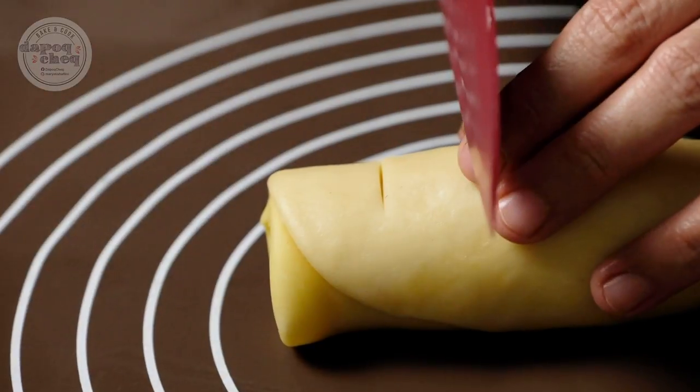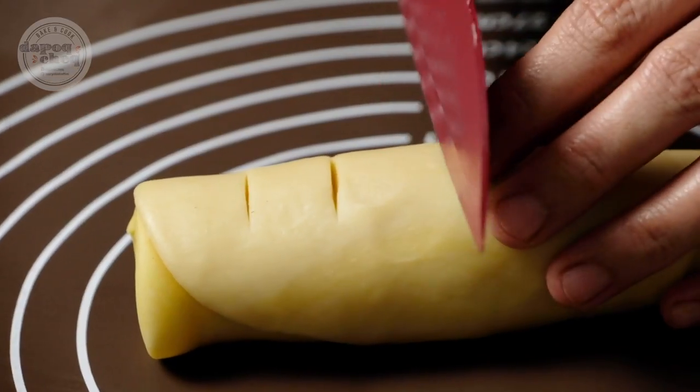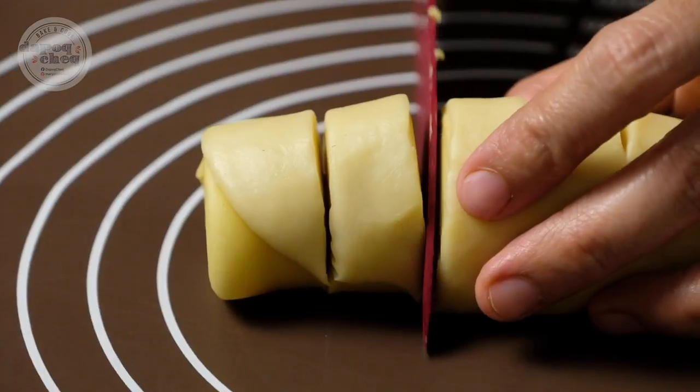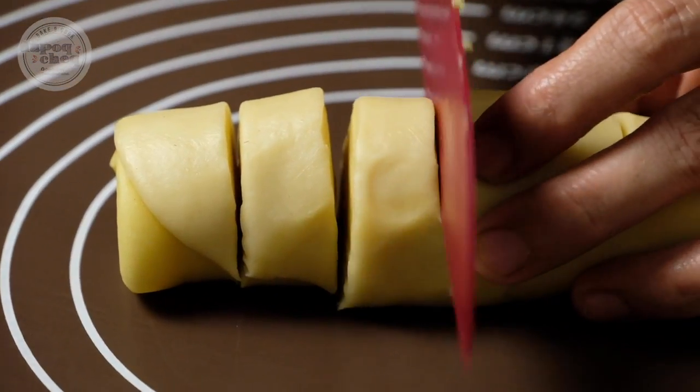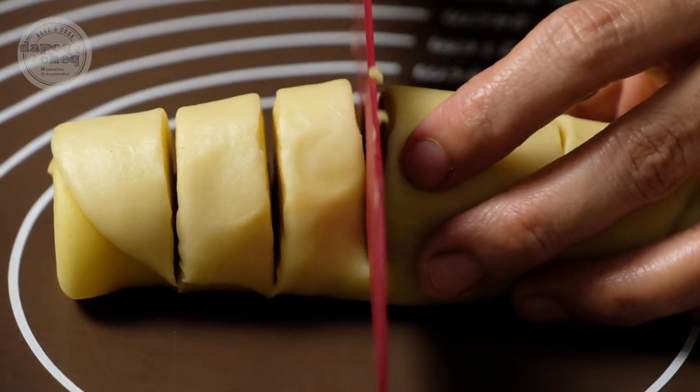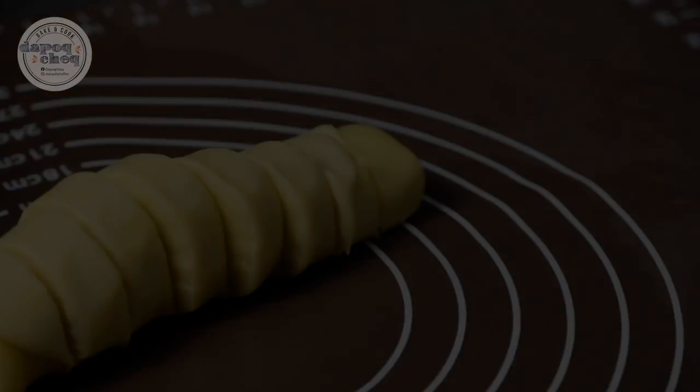Untuk potong, first kita buat marking dulu nak bagi senang. Jarak dia lebih kurang 1 inci each. Potong pelan-pelan, ikut marking yang kita dah buat tu. Jangan tekan kuat-kuat, kalau tak nanti dia layer kat dalam tu dia nanti dia macam renggang macam tu, nanti dia tak cantik. Lepas tu dah boleh buat kulit karipap, dah boleh canai untuk isi inti.